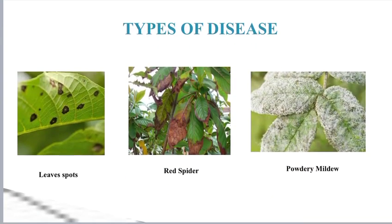These are the types of diseases detected on plants: leaf spot, red spider, and powdery mildew.